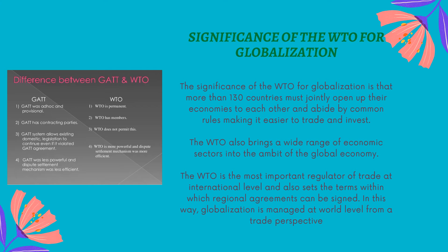Now for the differences between GATT and WTO. GATT was ad hoc and provisional, while the WTO is permanent. GATT had contracting parties, but the WTO has members. The GATT system allowed existing domestic legislation to continue even if it violated GATT agreements — a major loophole — but the WTO does not permit this. GATT was less powerful with a less effective dispute settlement mechanism, whereas the WTO is more powerful with a stronger dispute settlement mechanism.